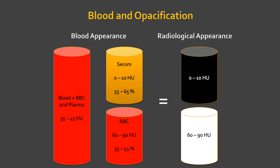This can further change if patients have thalassemia, which increases iron in their blood. Also, if patients are dehydrated, plasma or serum alone is anywhere between 0 and 10 Hounsfield units — similar to the density of water or CSF — and this accounts for about 55 to 65% of the blood system. The remaining percentage is the red blood cell component, which is between 60 and 90 Hounsfield units.